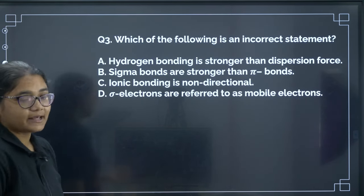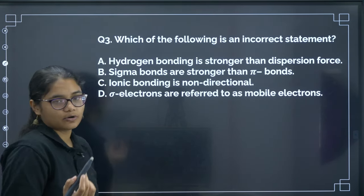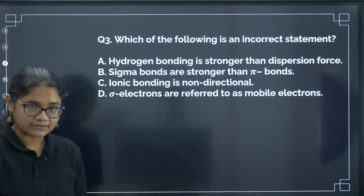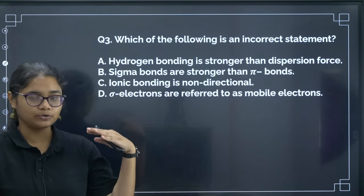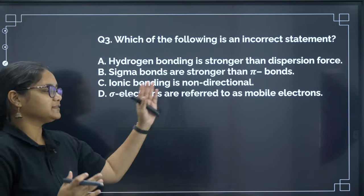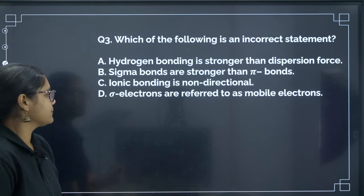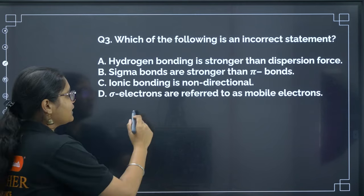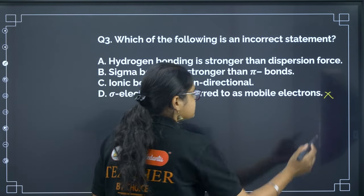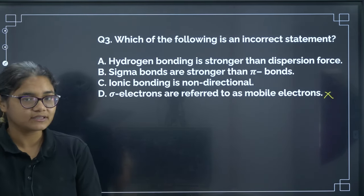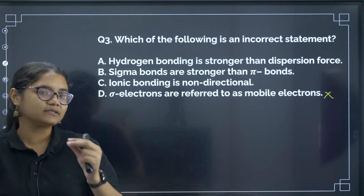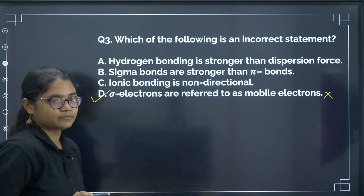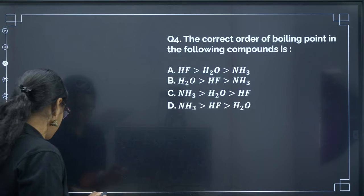Next: which of the following is an incorrect statement? Hydrogen bonding is stronger than dispersion force — correct. Sigma bonds are stronger than pi bonds — correct. Sigma bond is due to head-on overlapping whereas pi bonds are due to lateral overlapping — correct. Ionic bonding is non-directional — correct. Sigma electrons are referred to as mobile electrons — this is incorrect, because pi electrons are mobile electrons. Sigma electrons are not mobile. So the correct answer is option D.